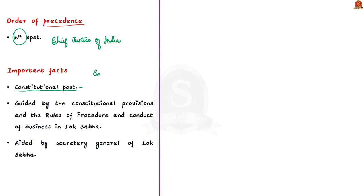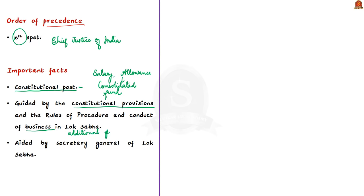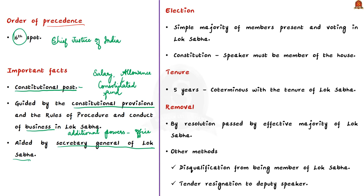The office of the Speaker is a constitutional post and the salaries and allowances of the Speaker are charged to the Consolidated Fund and are not voted upon by Parliament. The office is guided by constitutional provisions and the rules of procedure and conduct of business in Lok Sabha. The Speaker is assisted by the Secretary General of Lok Sabha and senior officers of the secretariat on parliamentary activities, practice, and procedure.